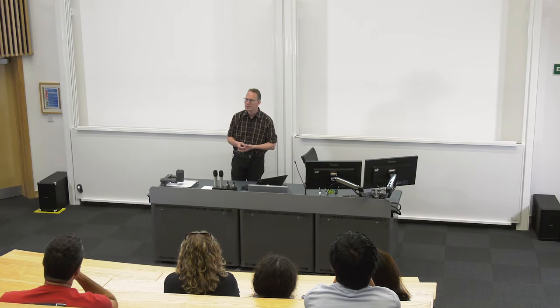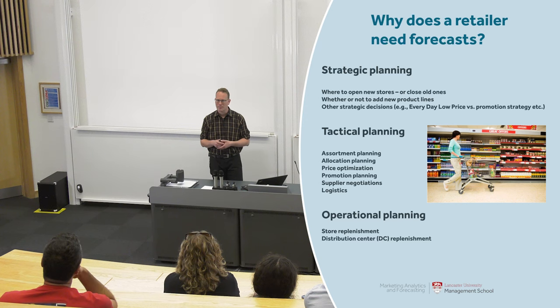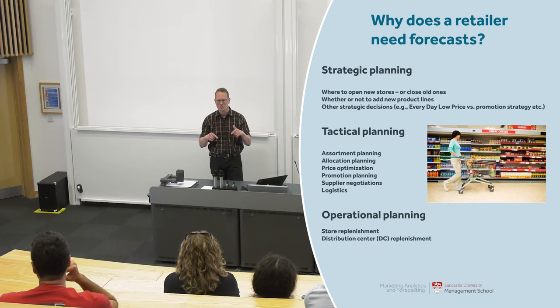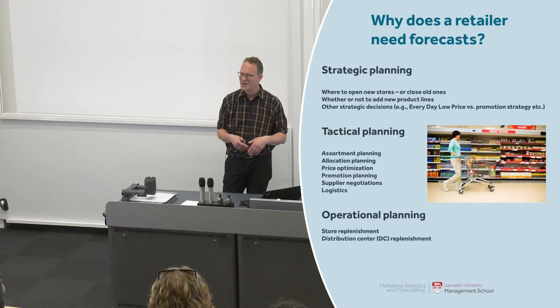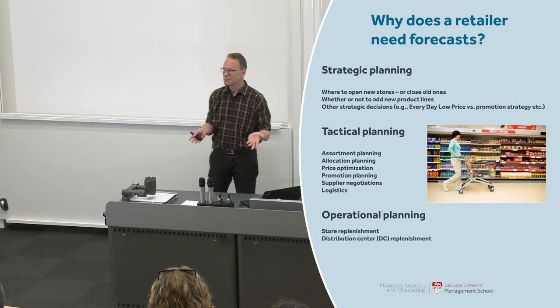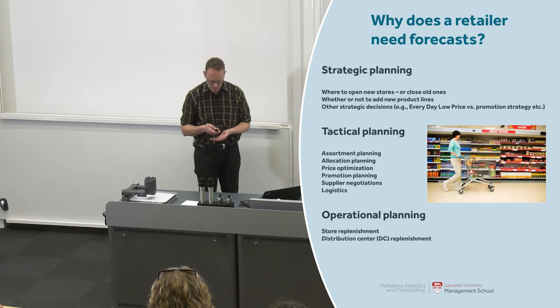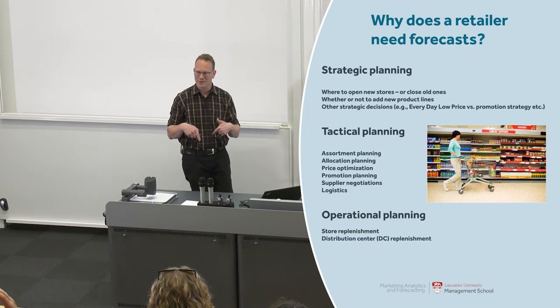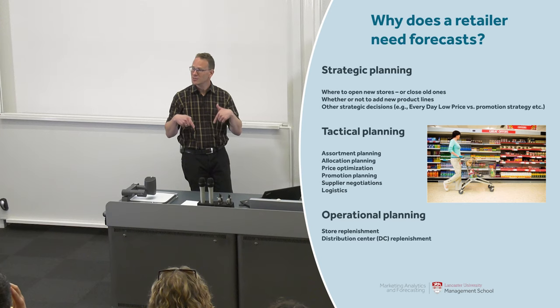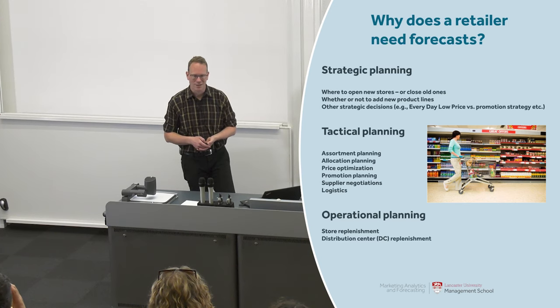You need forecasts for tactical planning like assortment planning — I'm selling canoes, but which canoe am I going to put into my stores for the next canoeing season? They take up a lot of space; I can't just put in everything. Also allocation planning, price optimization, promotion planning, supplier negotiations and logistics. Finally, operational planning like store replenishment or distribution center replenishment, and that bottom part is what I know most about.